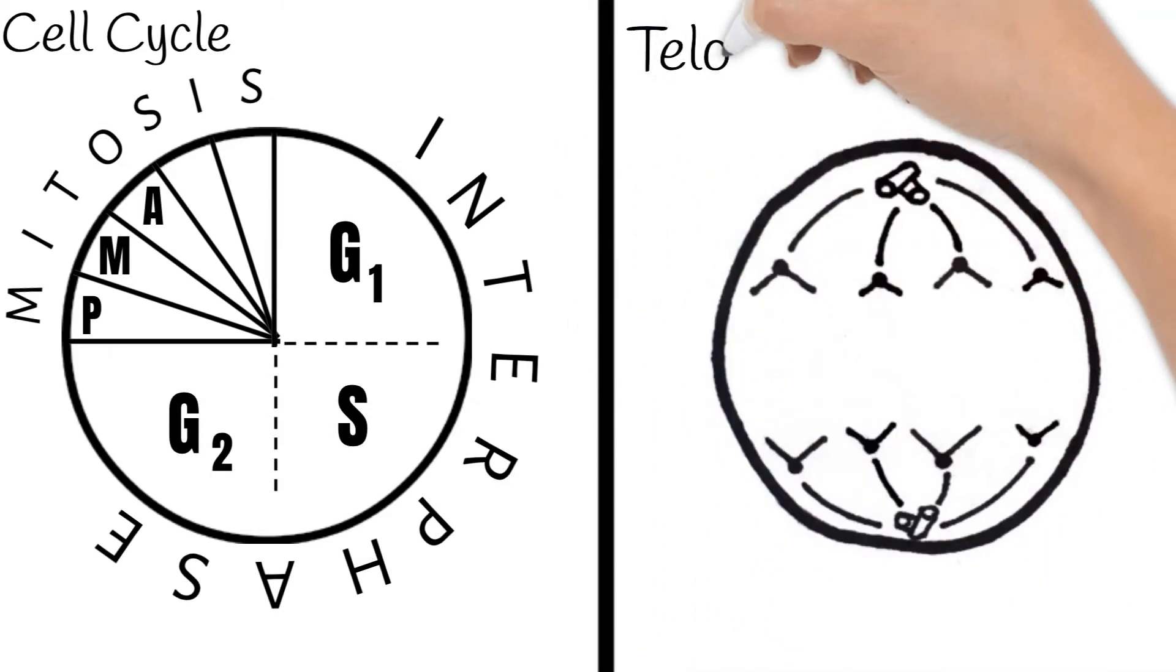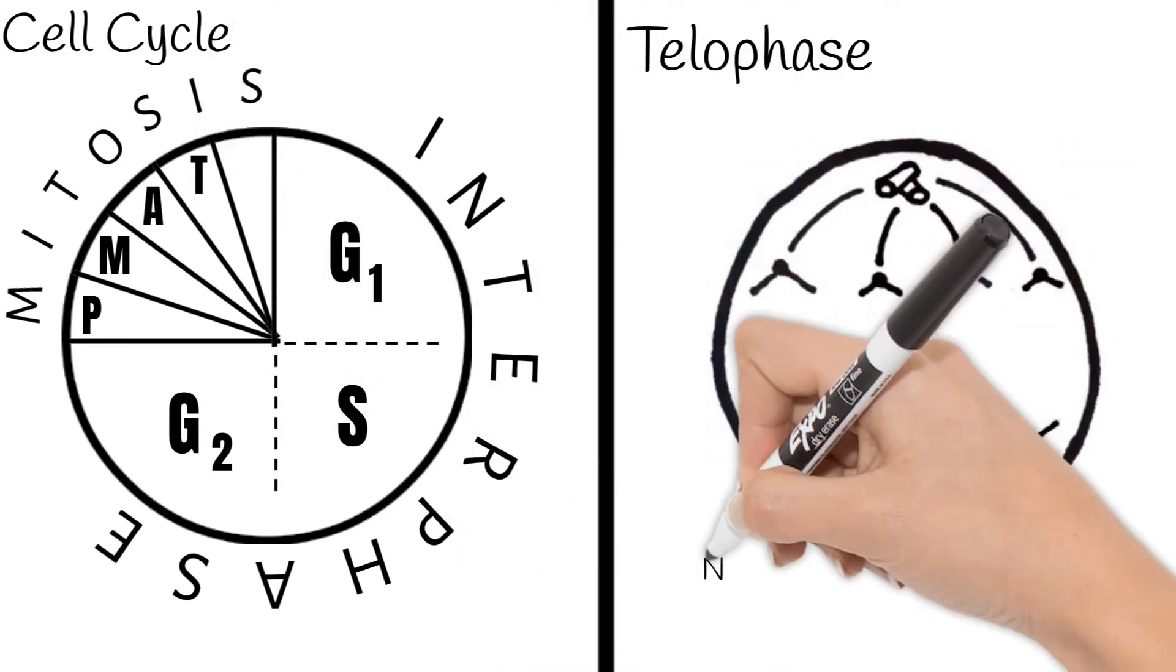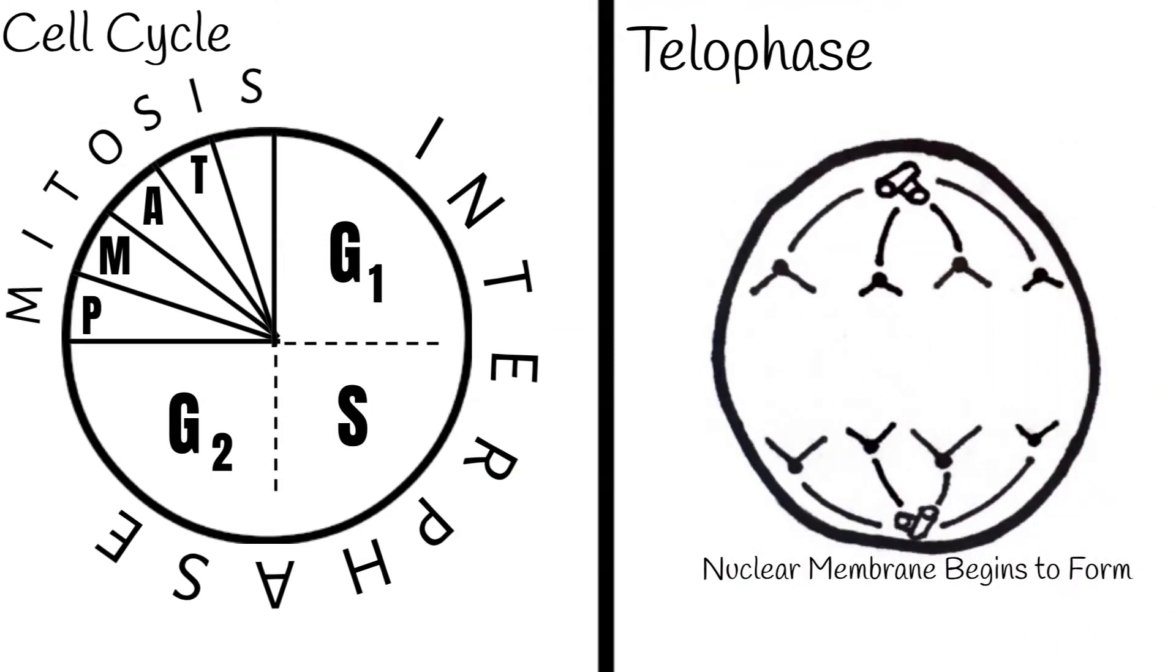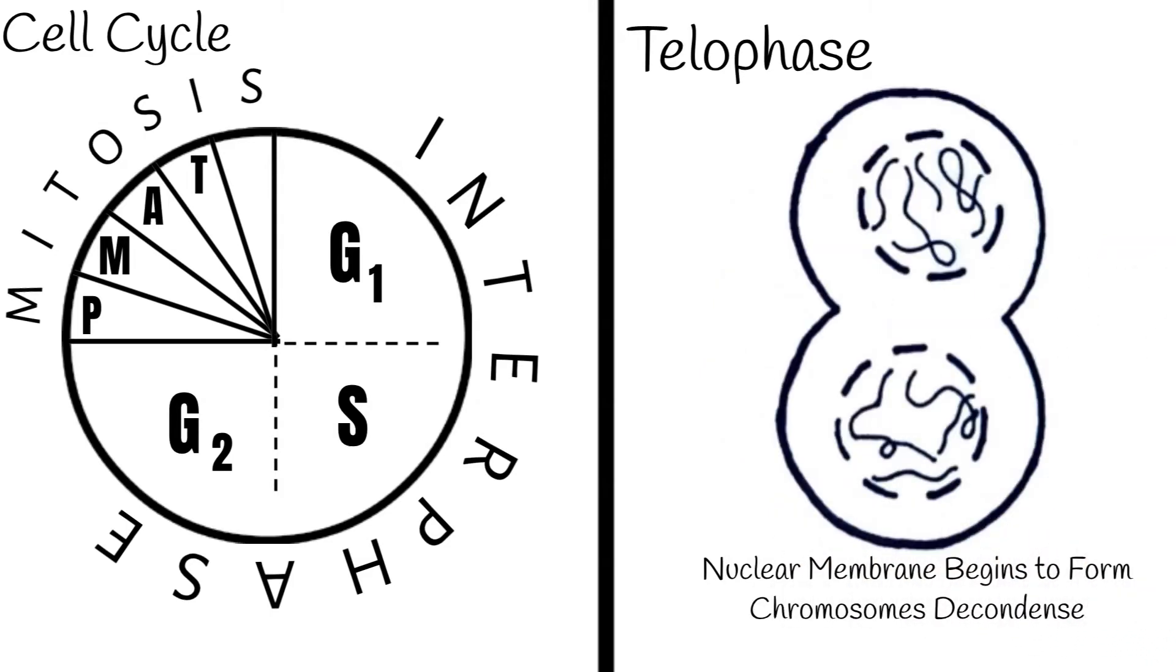Telophase is next. During telophase, nuclear membranes begin to form around each side of chromosomes. Those chromosomes decondense and become a general mass of genetic material.